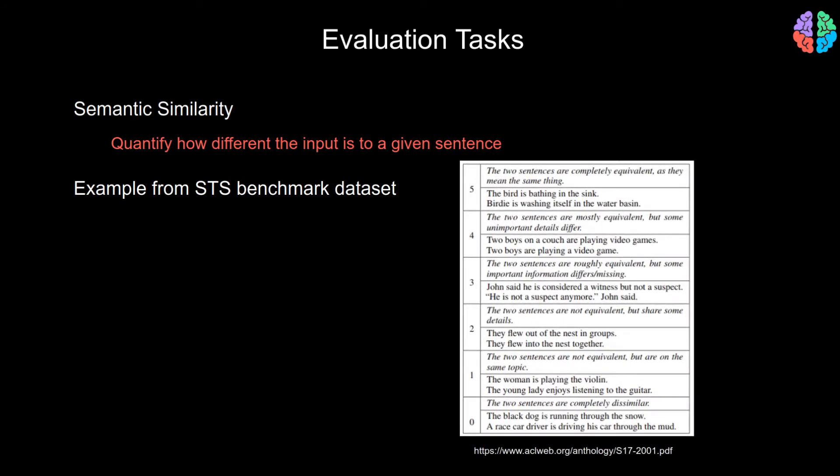The second task is semantic similarity. It's about quantifying how similar or close in meaning the second sentence is to a given first sentence. These are just a few examples from the semantic textual similarity benchmark. If the score is zero, it means that the sentences are least similar. And if the score is five, then it means that the sentences are very similar.